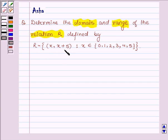all the ordered pairs (x, x+5) such that x belongs to the set {0, 1, 2, 3, 4, 5}.